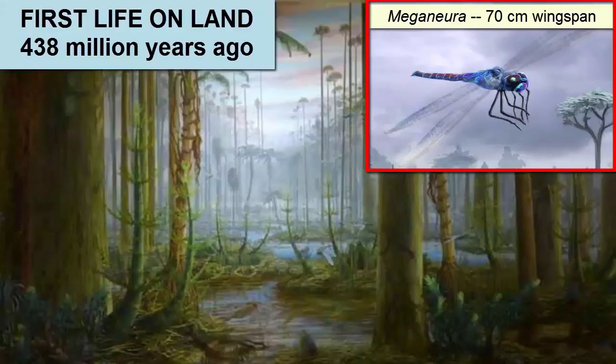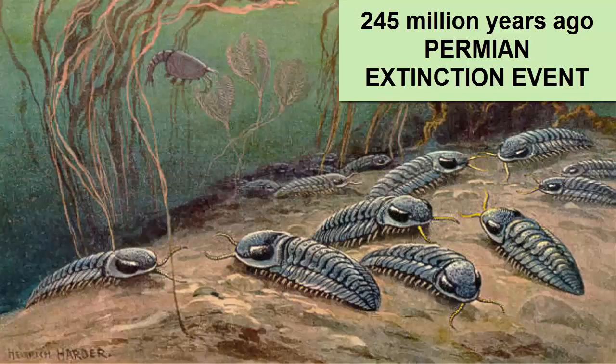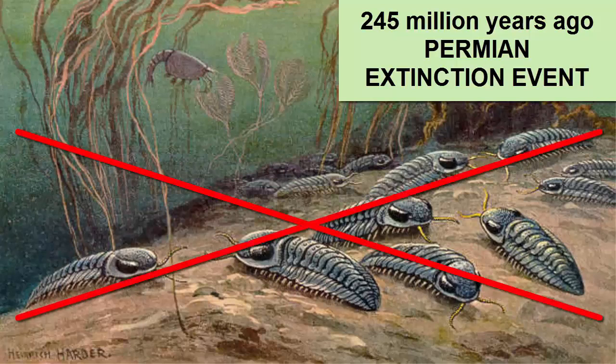438 million years ago is our first evidence of organisms moving onto land, including the first plants and insects. 245 million years ago was the largest mass extinction on the planet, during which the trilobites and many other early forms of life went extinct.